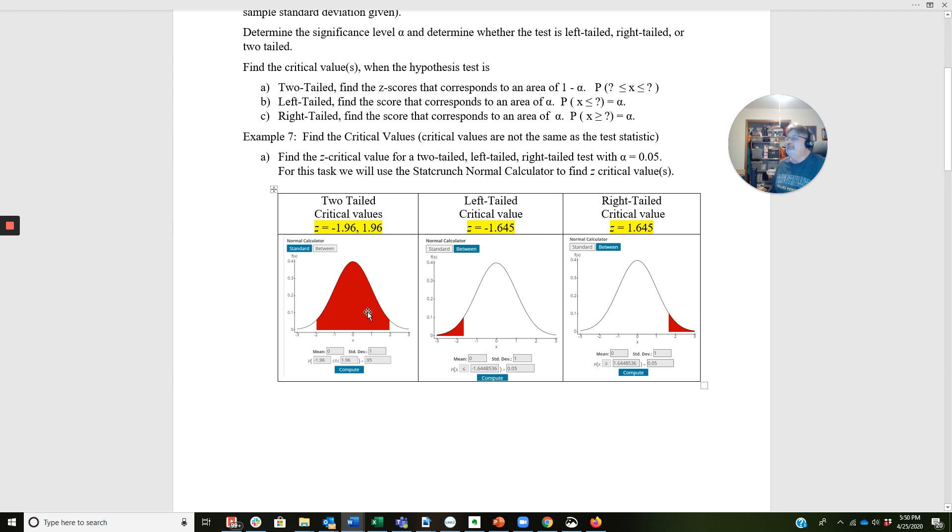But for the two-tailed test, it's a little bit different. We take one minus 0.05 to get 0.95. If you'll notice, that's what I have entered in here. I want to identify this spot and this spot. Don't let the shading throw you off, the rejection regions are still in the tail. So I end up with a negative 1.96 and a 1.96. Notice also I'm using the between tab, clicking this between tab to find the critical value for a two-tailed test.